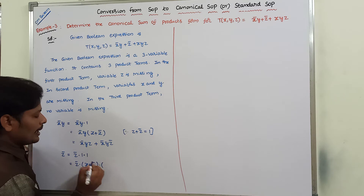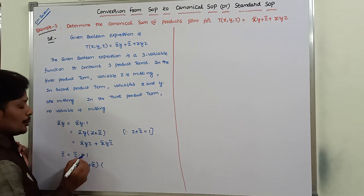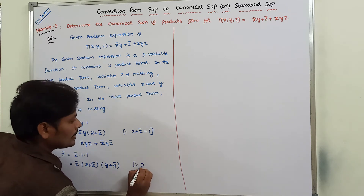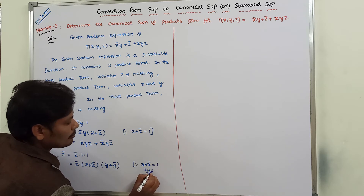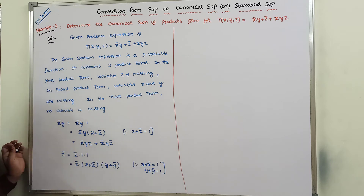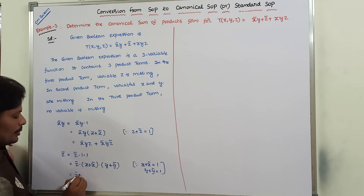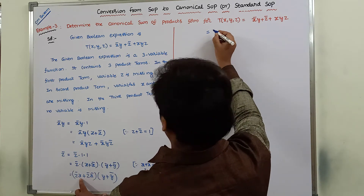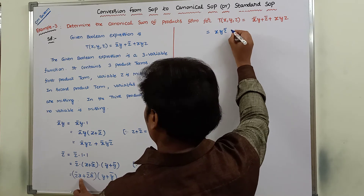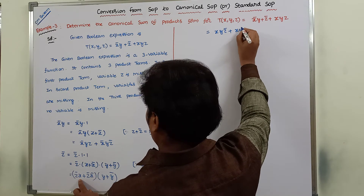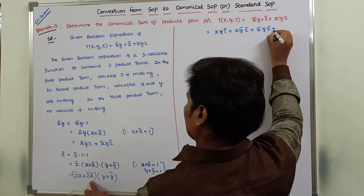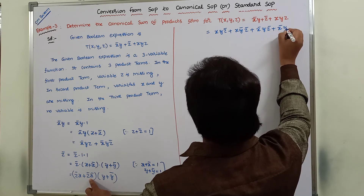Next, I am taking the second product term z̄. In this term, what variables are missing? Variable x and variable y are missing. So 1 can be replaced with x plus x̄, and then also y plus ȳ. We already know that x + x̄ = 1 and y + ȳ = 1. Now we multiply z̄ by x and x̄, then by y plus ȳ. So we get: xyz̄, xȳz̄, x̄yz̄, x̄ȳz̄.